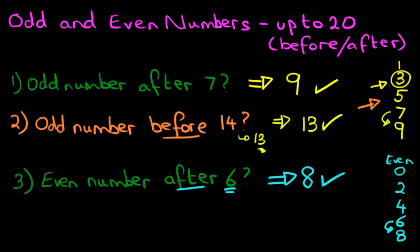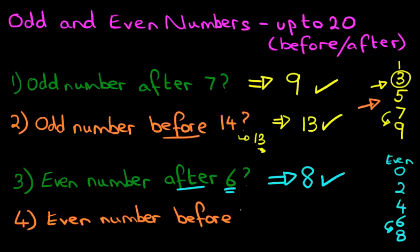So now we're going to look at one final example. What is the even number before 17? Read the question carefully. Now the first thing we're going to do is simply count backwards. So the number before 17 is 16.